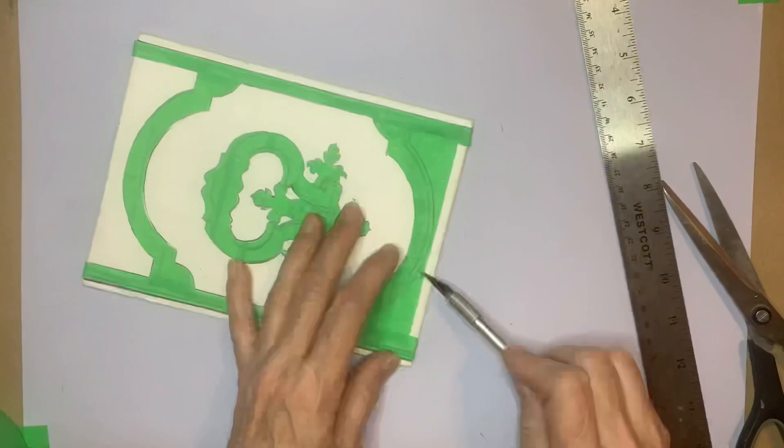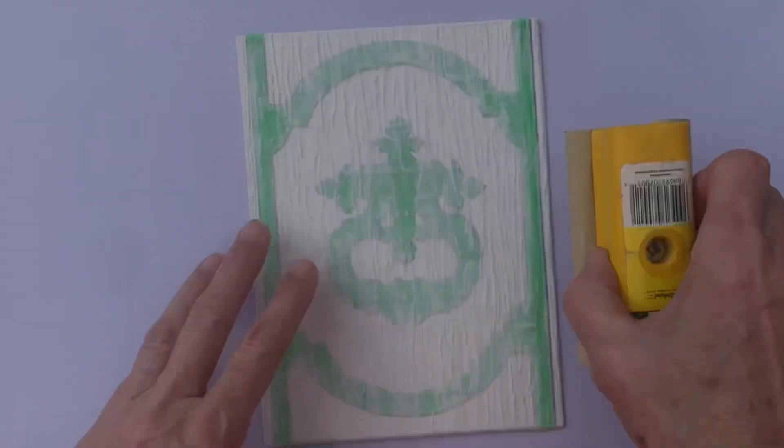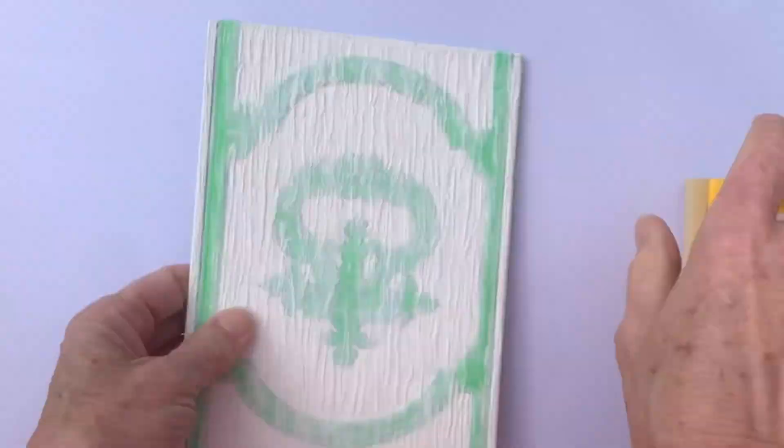The texture left behind by the coarse brush will catch too much ink when printed, so the modeling paste is sanded down to a smoother surface being careful not to overdo it.